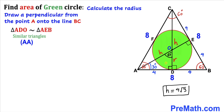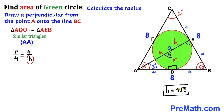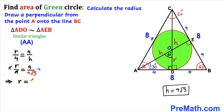Setting up a proportion from the similar triangles: r/4 = 4/h. Since h = 4√3, we substitute: r/4 = 4/(4√3). Multiplying both sides by 4 to isolate r, we get r = 4/√3. So our radius is 4 divided by √3.